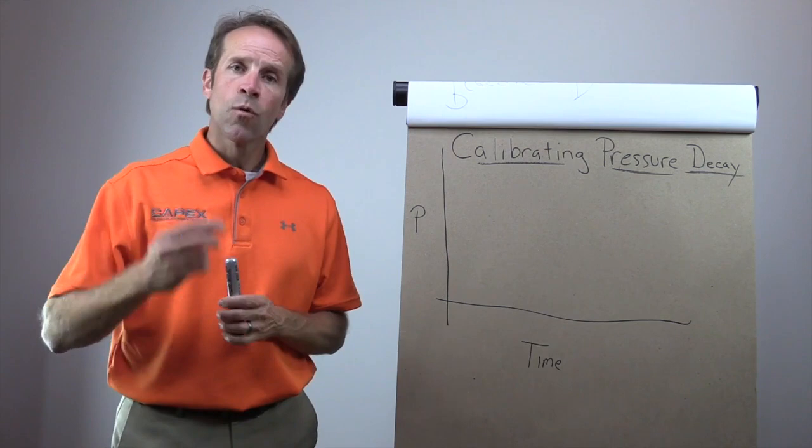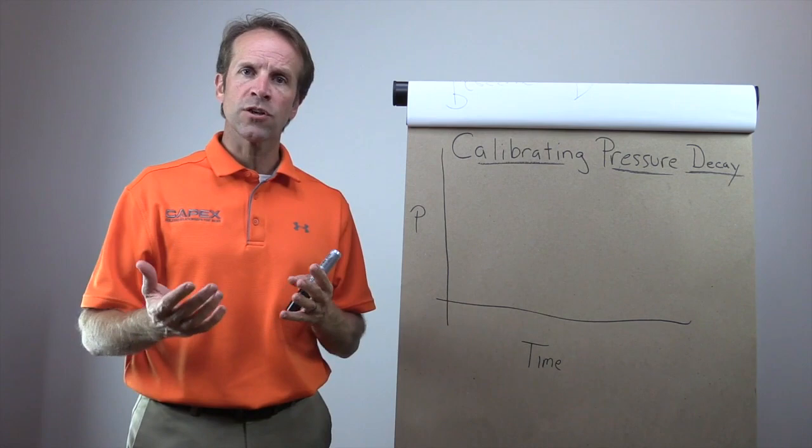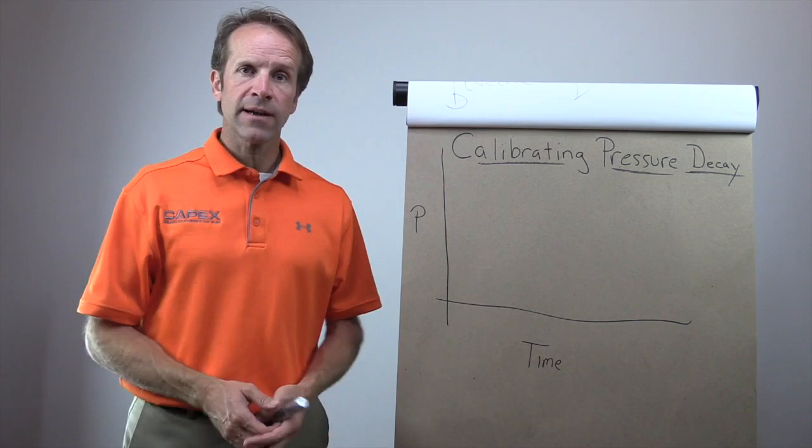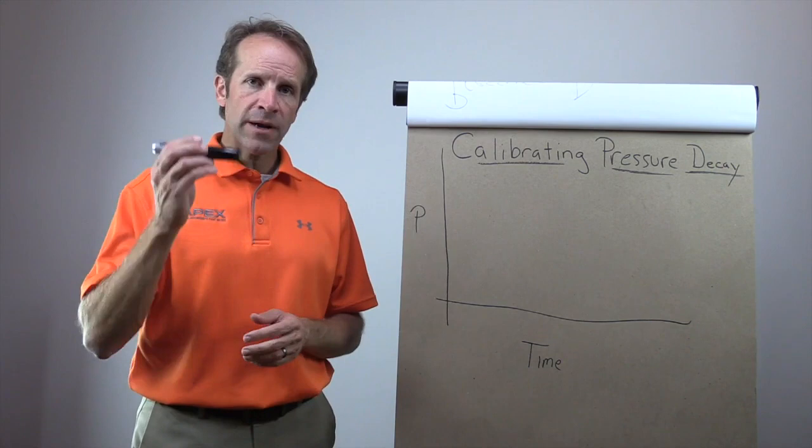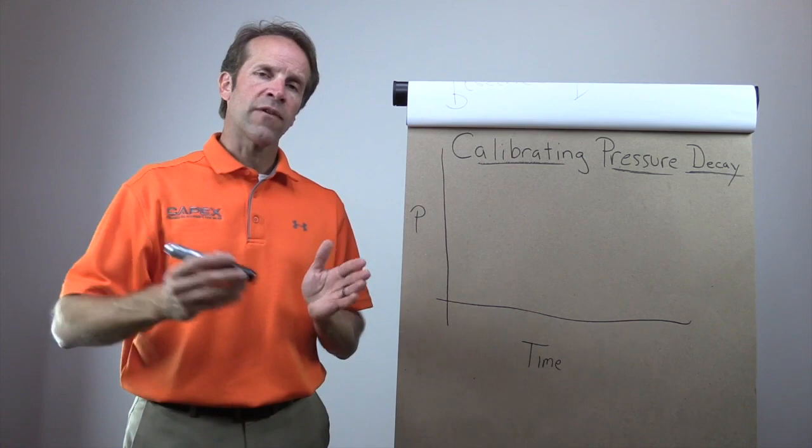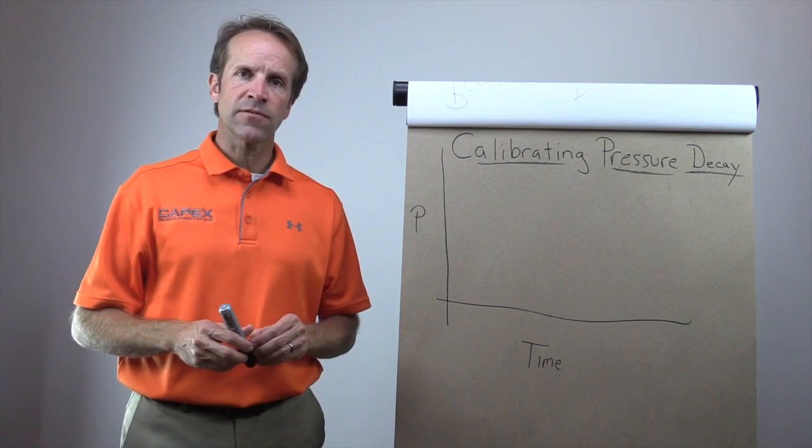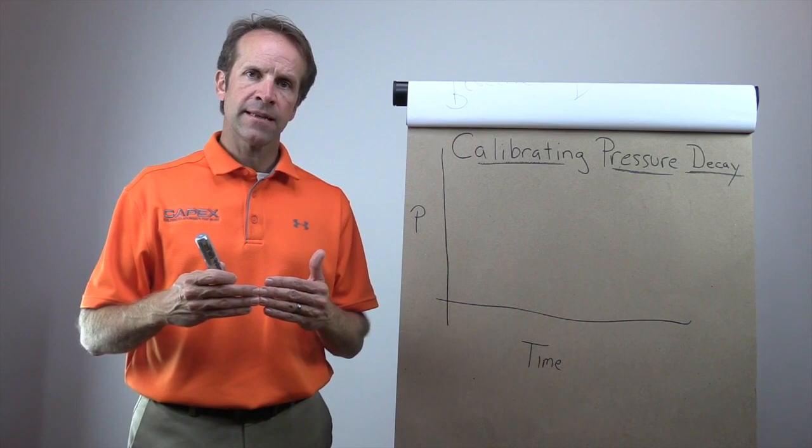The first test is on our known good part. So we're going to identify a known good part. People ask me all the time, Russ, how do I get a known good part? The way that I have done it in the past and encourage customers to do it is identify 20 to 30 parts that you think are good. Calibrate to one of those parts and then test the rest of the parts. Find the part that is the most negative.